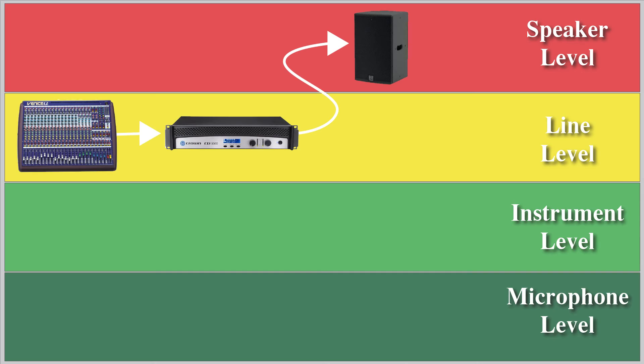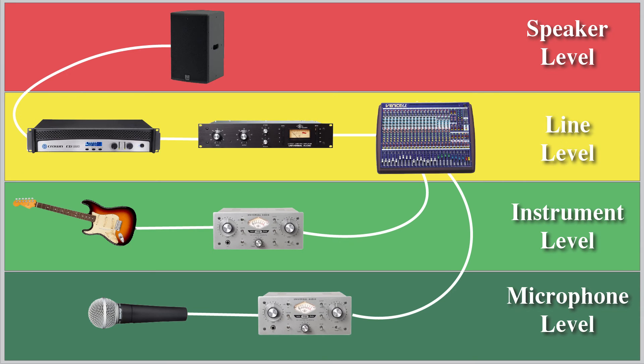While line level is adequate for sending a signal from one device to another, it's not strong enough to power a speaker. In order to power a speaker, the line level signal needs to be amplified again. This can be done with a power amplifier. A power amp takes in a line level signal, amplifies it, and outputs a speaker level signal that is strong enough to power a speaker.